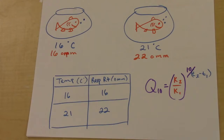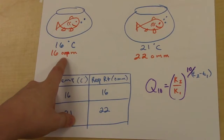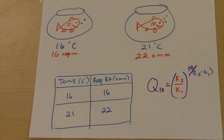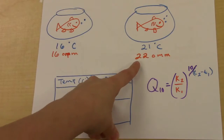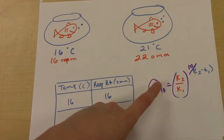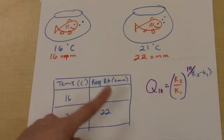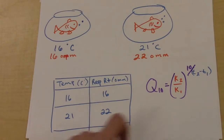Let's look at an example. If I have a fish in an experiment and the water it's in is 16°C, and it's respiring — measured in OPM, operculum movements per minute, the number of times the gill flaps open and close. Then if the temperature is raised to 21°C, it respires at 22 operculum movements per minute. What is the Q10? They would give us this data in a table and say, according to this table, what is the Q10, and we'd find the equation on the formula sheet of the exam.